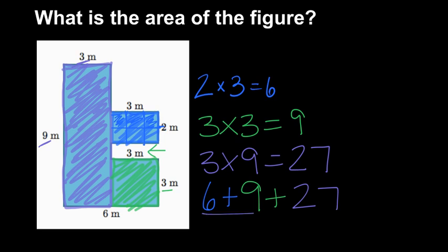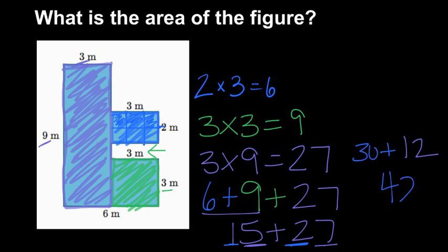And we can solve that, six plus nine is 15. 15 plus 27, five ones and seven ones is 12 ones. And one 10 and two 10s, or a 10 and a 20, is 30. And 30 plus 12 is 42. So the area of the entire figure is 42 square meters.